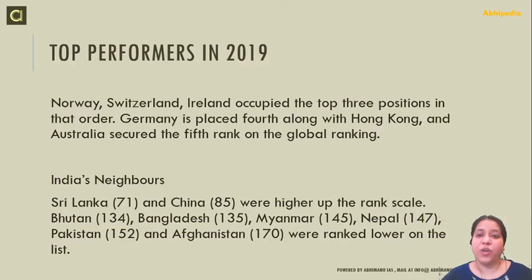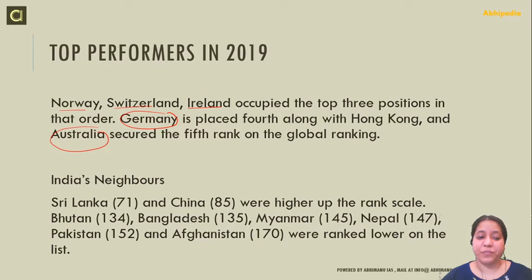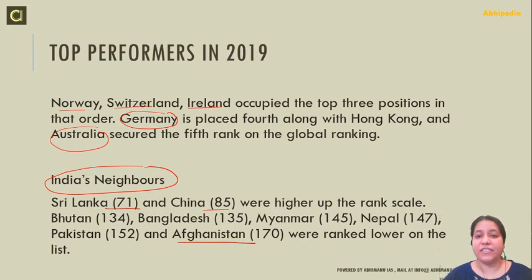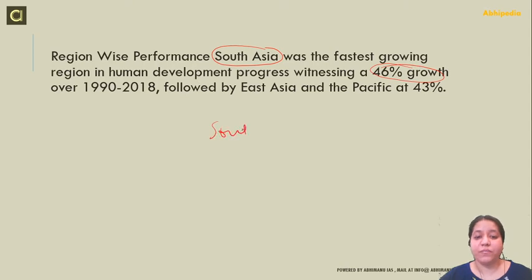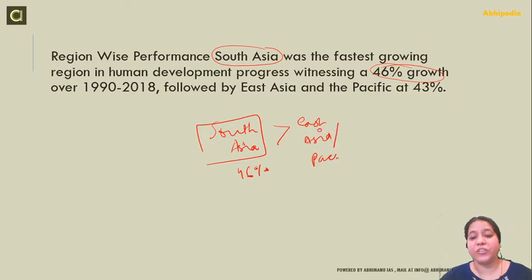The top performers in 2019 are Norway, Switzerland, and Ireland at the top three positions. Germany and Hong Kong are at fourth, and Australia is at fifth. Among India's neighbors, Sri Lanka is at 71 and China is at 85. Bhutan, Bangladesh, Myanmar, Nepal, Pakistan, and Afghanistan rank lower, with Afghanistan at the lowest. Region-wise, South Asia is the fastest growing region in human development progress, witnessing around 46% growth, followed by East Asia and Pacific at 43%.